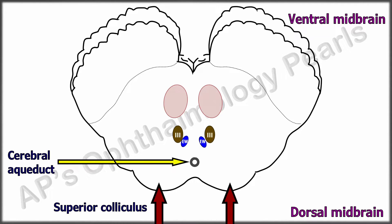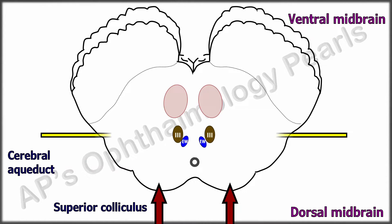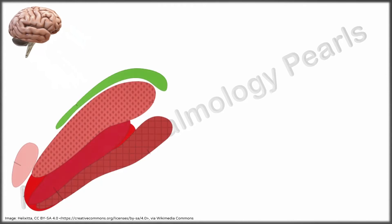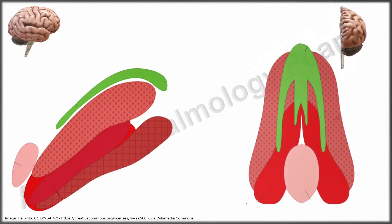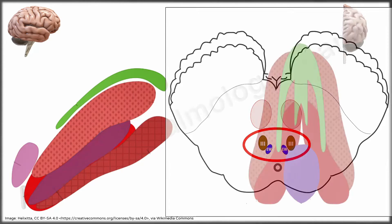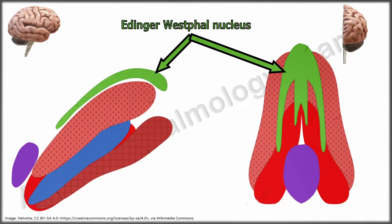This is the cerebral aqueduct. As you can see, the main oculomotor nucleus lies ventral to the periaqueductal gray matter. Here is a view of the oculomotor nuclear complex from the right lateral aspect and here is the coronal view from the dorsal aspect. We note from this the dorsomedial position of the Edinger-Westphal nucleus with respect to the main oculomotor nucleus.